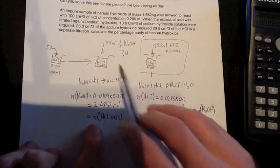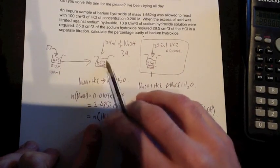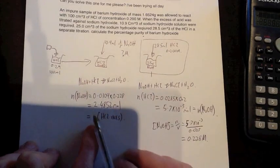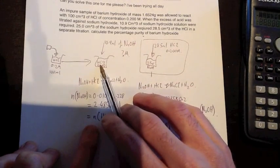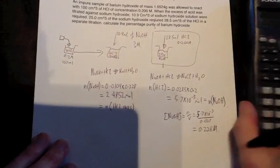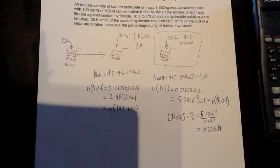Now this, because it's a 1 to 1 ratio, will be equal to the number of moles of hydrochloric acid in excess. Okay? So because we reacted with our hydrochloric acid in excess, the number of moles of this is equal to the number of moles in excess there. So we need to look at next...